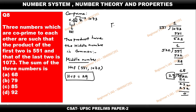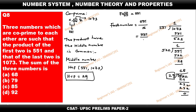Now we need to identify the first number. It is given that the product of the first two numbers is 551, so first number × second number = 551. We have already found the middle number, which is the second number, that is 29. So divide 551 by 29 and you get 19 as the first number.